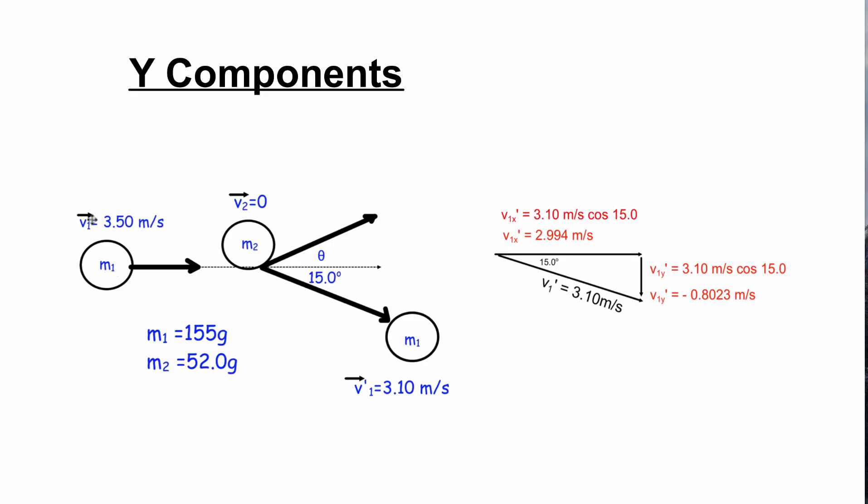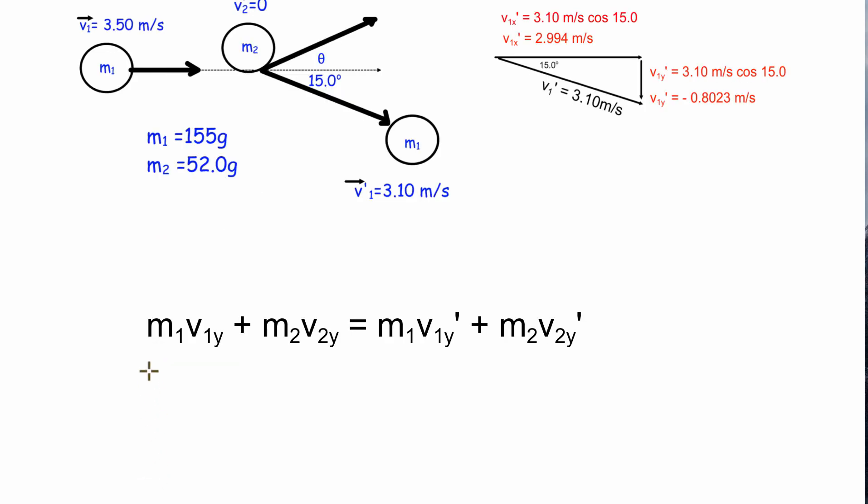Now we're going to look at the y components. Here was ball one coming in at 3.5 meters per second, actually coming in along the x-axis. Ball two is not moving whatsoever. Ball one ends up having a y component of negative 0.8023 meters per second, but we don't know anything about the y component of ball two. The conservation of momentum says m1 v1y plus m2 v2y will be equal to m1 v1y prime plus m2 v2y prime. There is no motion in the y direction for the interaction which means both of those terms are going to go to 0.